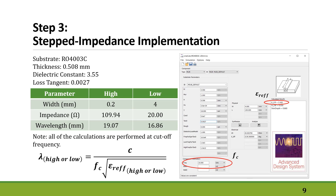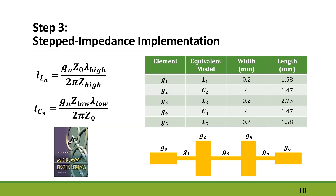Now we have our high and low impedance values and their equivalent widths. Another useful piece of information from this step is the wavelengths corresponding to the high and low impedances. You can calculate wavelengths using this equation, and you can find the effective relative dielectric constant in the calculator. Something important to remember is that all these calculations are done at the cutoff frequency.